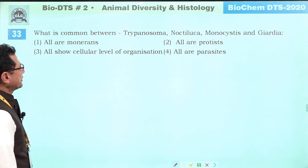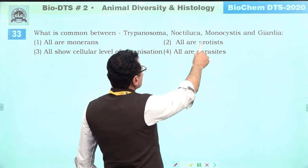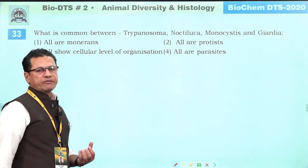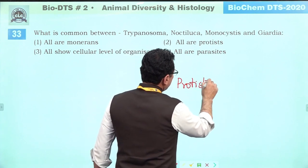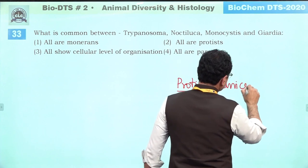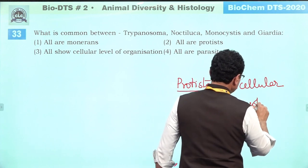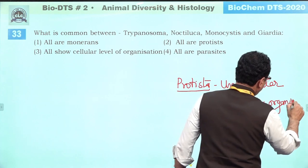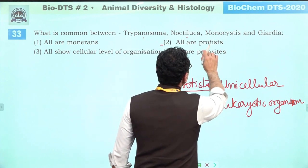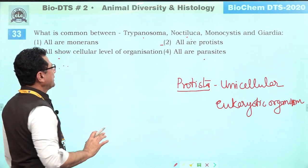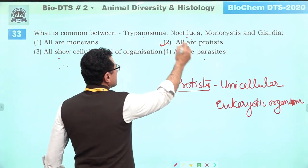What is common between Trypanosoma, Noctiluca, Monocystis, and Giardia? All are protozoans. In Whittaker's five kingdom classification, they belong to the kingdom Protista — unicellular eukaryotic organisms. Not all are parasites (Noctiluca is not). They are at protoplasmic level of organization. Answer is second: all are protists.